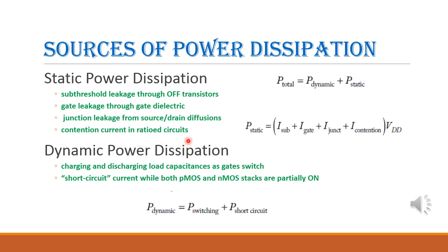The causes for dynamic power dissipation are: charging and discharging of load capacitance, and short circuit current while both PMOS and NMOS transistors are partially on. These are the sources of power dissipation — both static and dynamic.